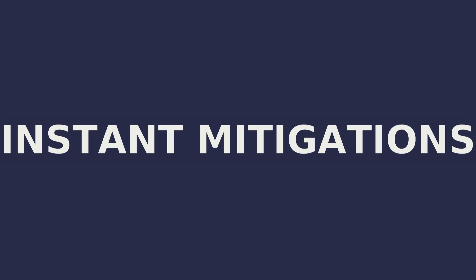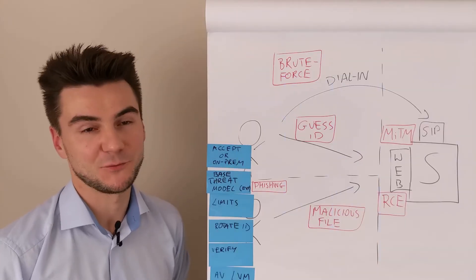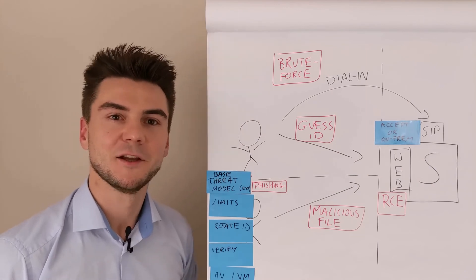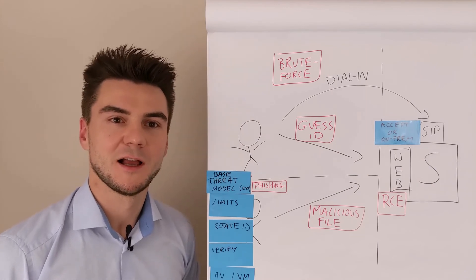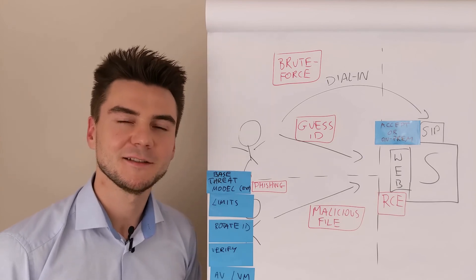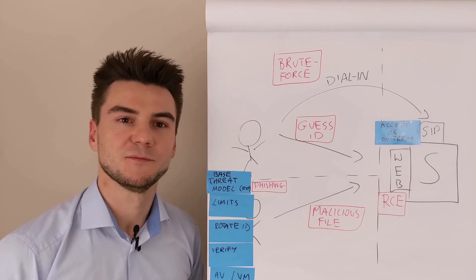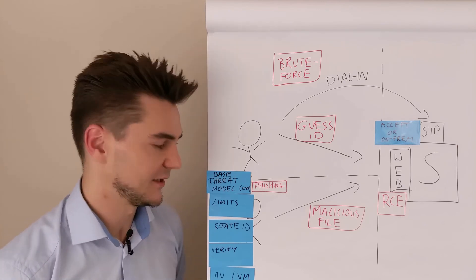Incident mitigations. Either accept the risk or switch to on-prem. Any system exposed to the internet should follow a base threat model for external service. This should include a least privileged principle, no excessive ports opened, no default passwords, regular update policy.